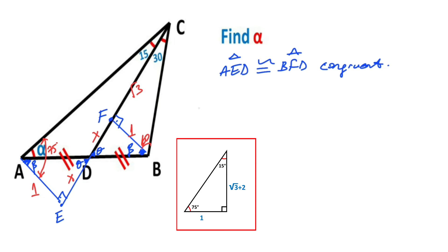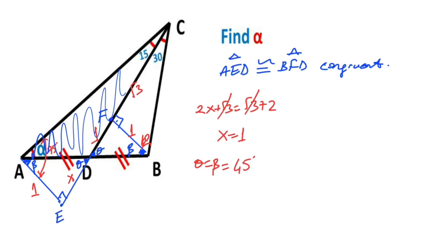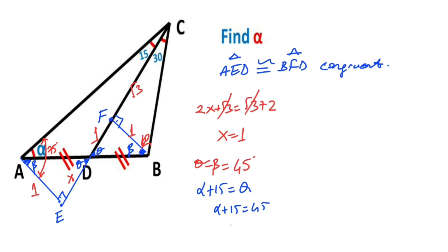That means 2x plus root 3 equals root 3 plus 2, which gives us x equals 1 unit. So if here is 1, that means we get an isosceles triangle. Therefore theta must equal 45 degrees. And for this triangle, we know that 2 interior angles equals 1 exterior angle — that means alpha equals 30 degrees.